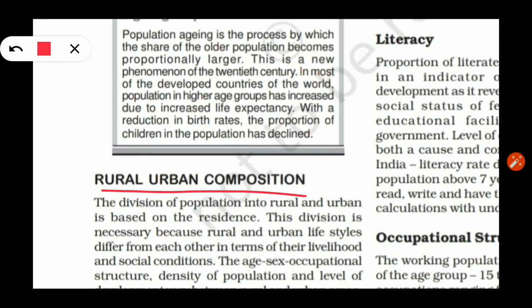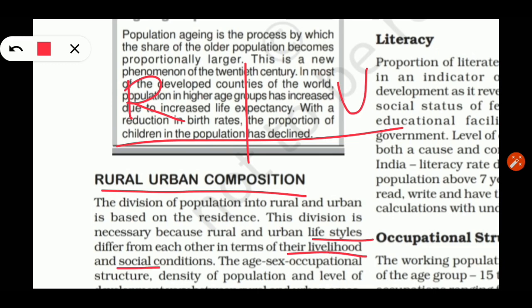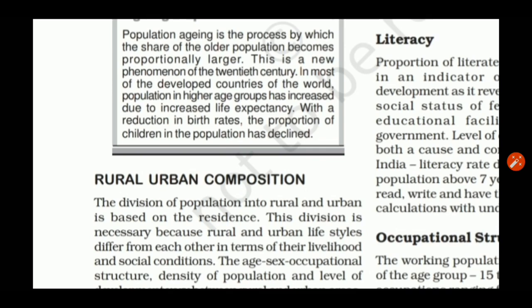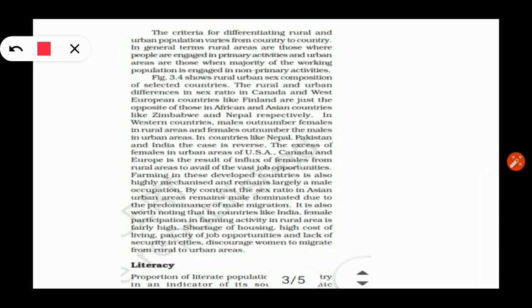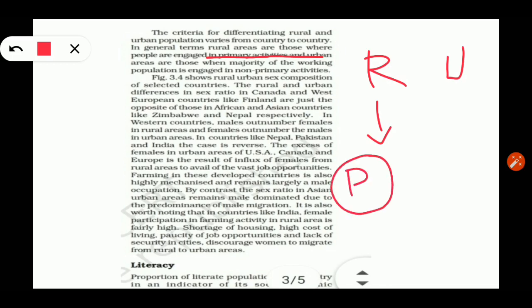Next is rural-urban composition. The whole population is divided into two categories based on their residence: rural and urban. This division is necessary because their lifestyle, livelihood, and social conditions differ from one another. Age, sex, occupation, structure, and density of population are also different. Different countries use different criteria to classify their populations, but the most common criterion is economic activity. In rural areas, primary activities like agriculture, fishing, and mining dominate, while in urban areas, secondary and tertiary activities dominate.